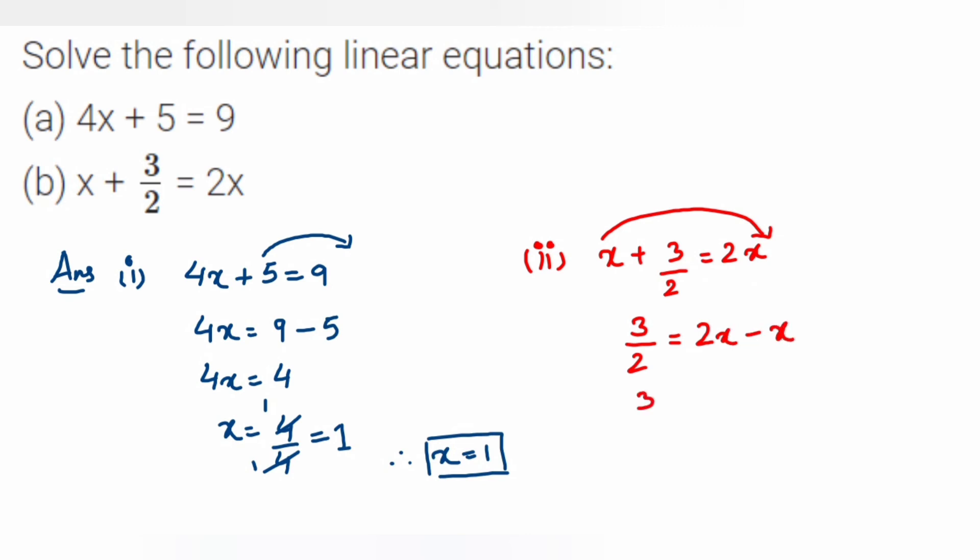So 3 upon 2 is equal to x. Therefore, from here we can write down x is equal to 3 upon 2. That's it. This is the answer for the second question. So you have done both the first and second one.